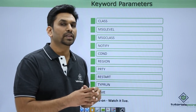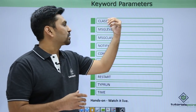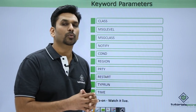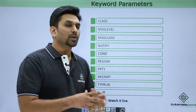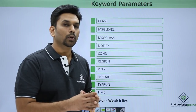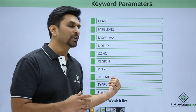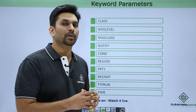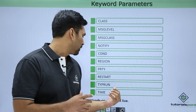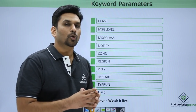Then we have REGION, which specifies how much address space has been given to the job for execution. Next is PRIORITY — if we have five jobs of the same class, priority decides which job should be executed first. We also have RESTART: if you want to restart a job from a particular step, say the fourth step skipping the first three, you mention that step name in the RESTART parameter.